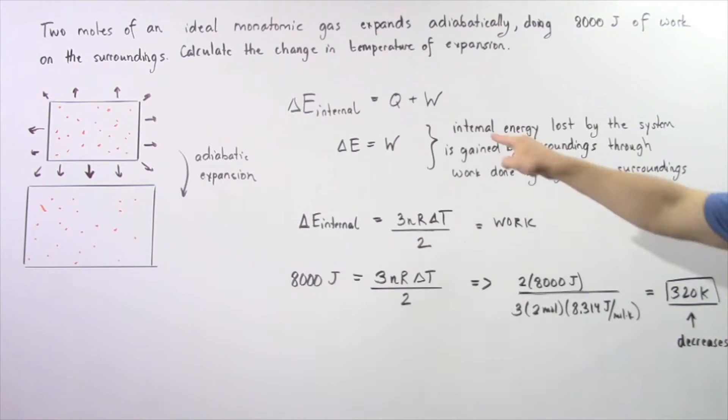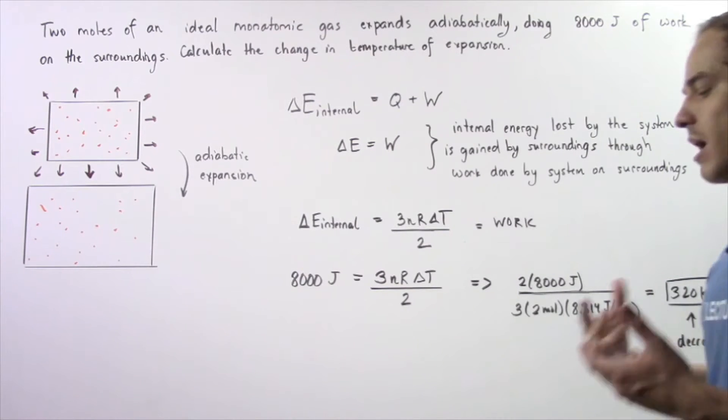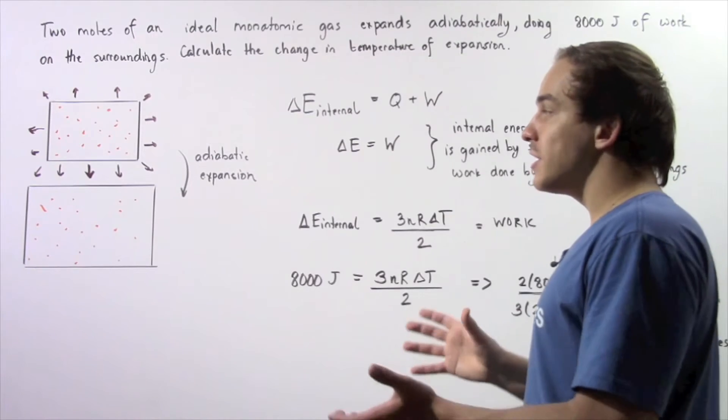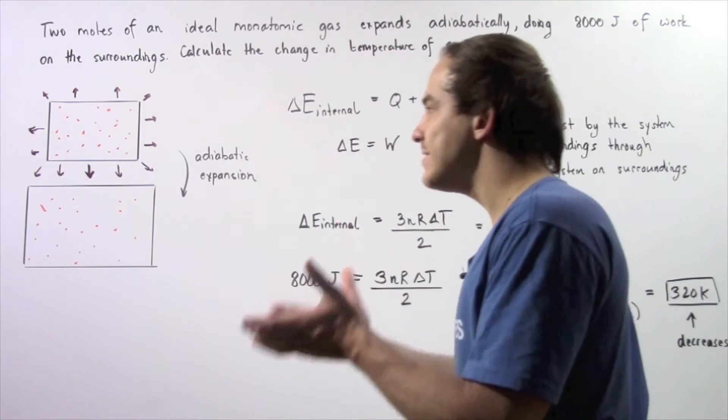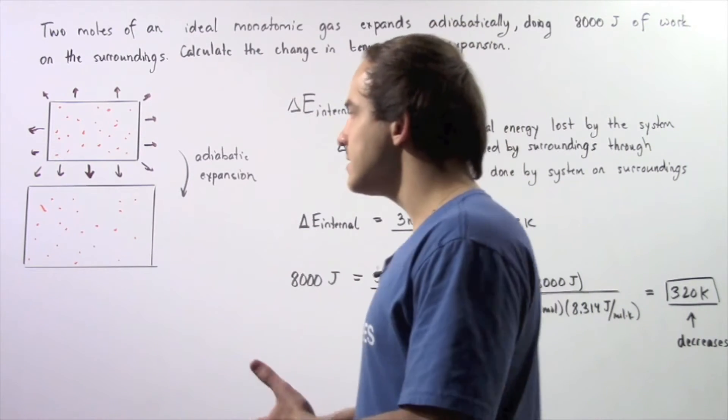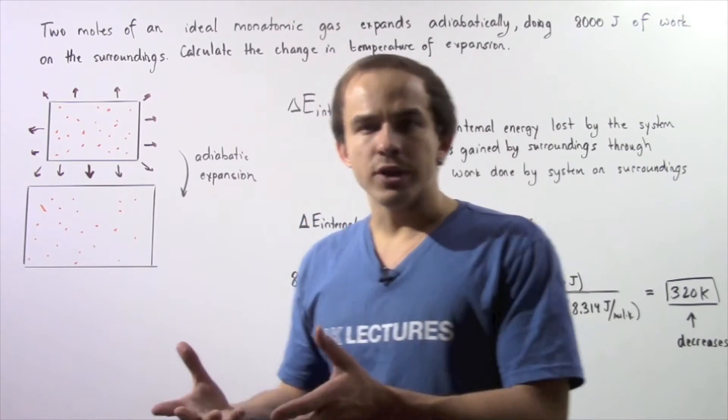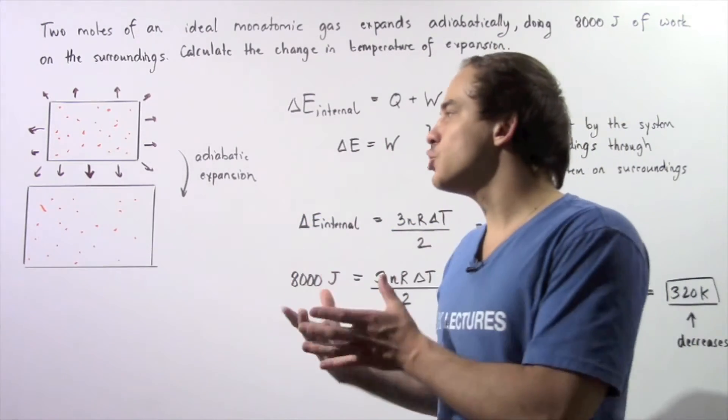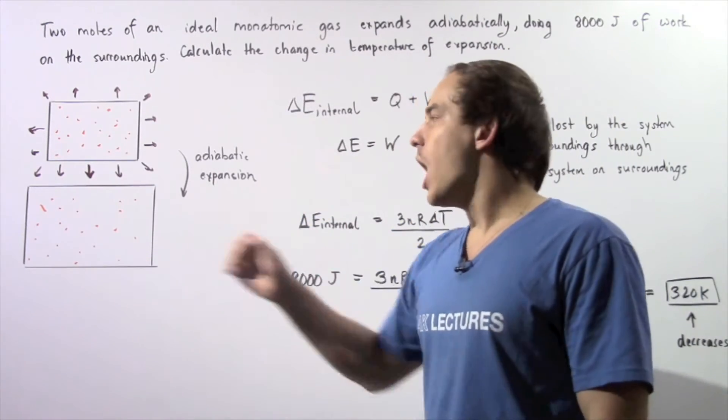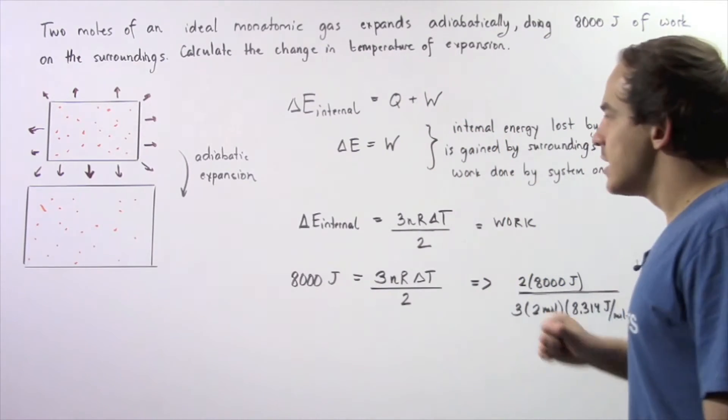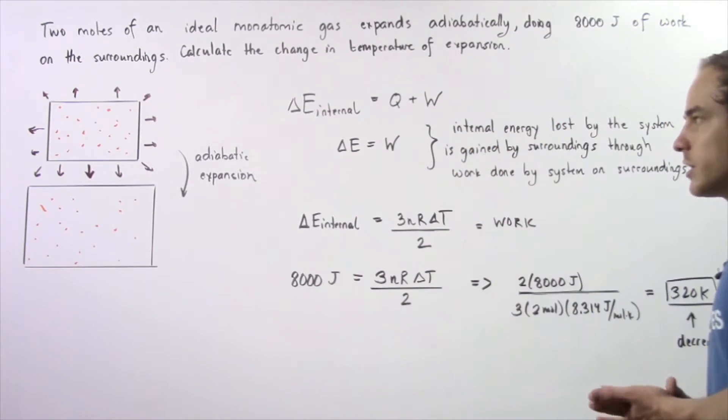The internal energy lost by the system is gained by the surroundings through work done by the system on the surroundings. There is a decrease in the internal energy of our system, and that decrease goes into increasing the energy of our surroundings. So the change in E equals the work.